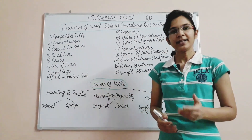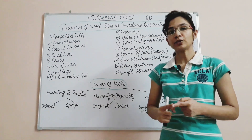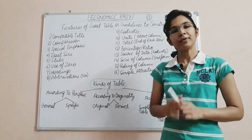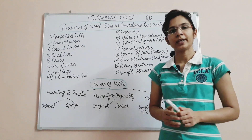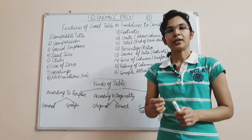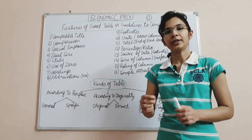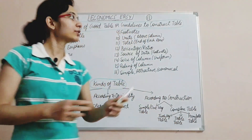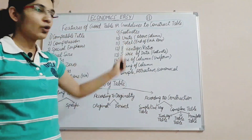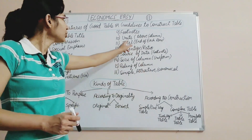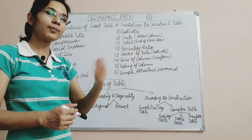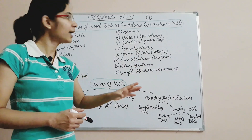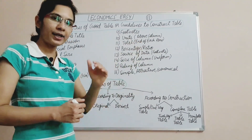Seventh is headings — headings are important and heading is the singular form. Eighth is abbreviations: we should use short forms, for example writing GOVT instead of Government. Ninth is footnotes: footnotes tell us additional information about the table. Tenth is units: units should appear on the column side.